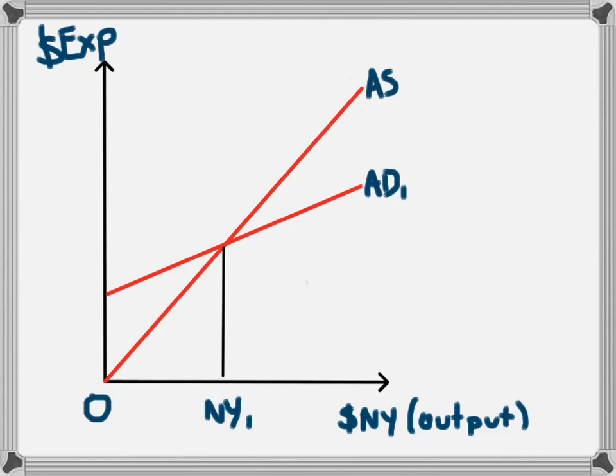The second movement in the aggregate demand line is when the whole aggregate demand curve increases or decreases. An example would be if businesses collectively decide to increase their spending. In this example, we call spending investment. Collectively, if businesses decide to increase their investment in machinery and other capital goods, it would lead to an increase in aggregate demand.